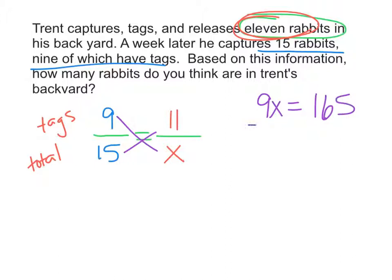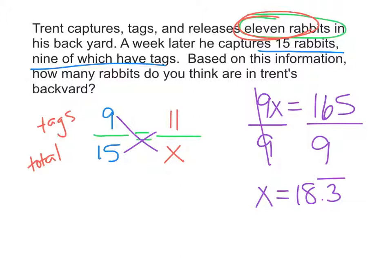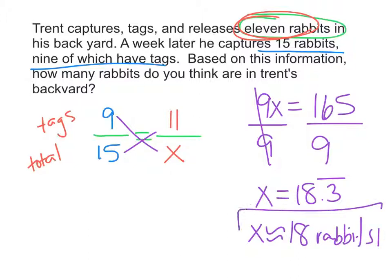To solve, we divide both sides by nine. So X equals 165 divided by nine, which gives us 18.3 repeating. Since we can't have 0.3 repeating rabbits, we round to approximately 18 rabbits. We would predict that there are 18 rabbits in his backyard based on that information.